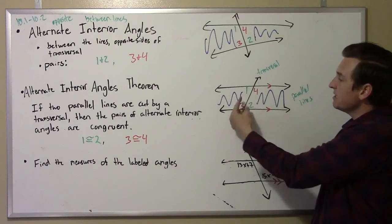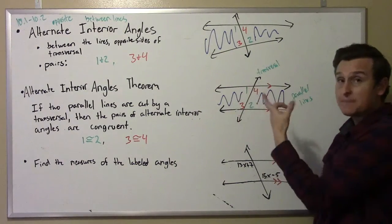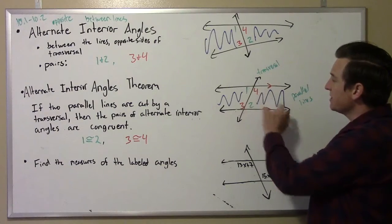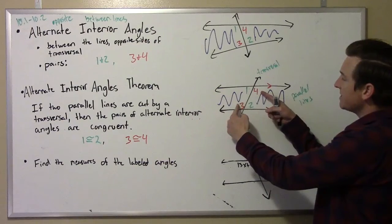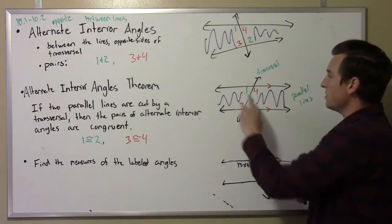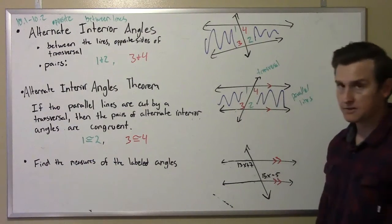In other words, if I have an alternate interior angle pair, then those two angles are congruent to each other. Again, alternate means they're on the opposite side of the transversal, and interior means they're on the inside of the two parallel lines. One and two are congruent, and three and four are congruent as well.